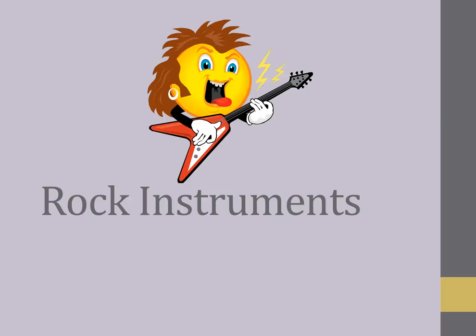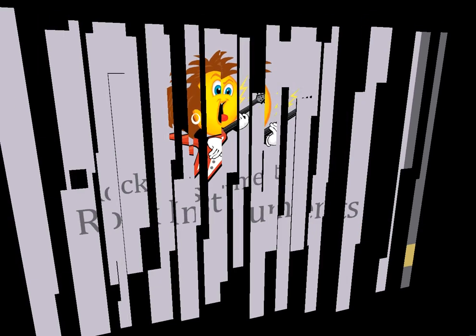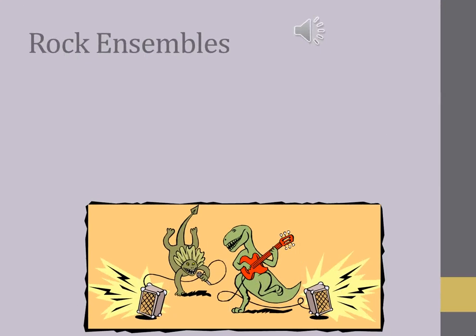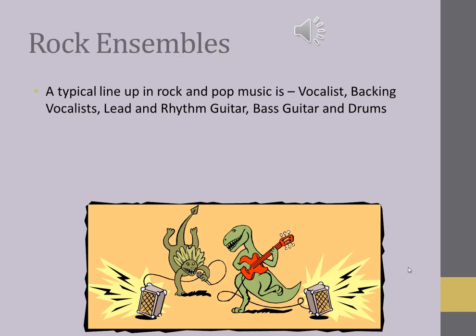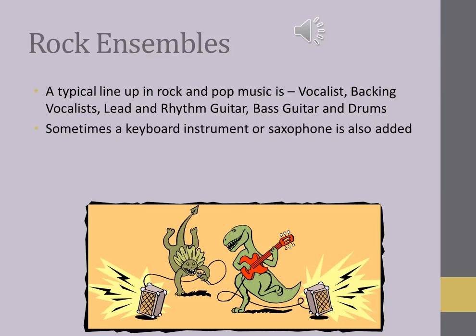Hi and welcome to Rock Instruments. A typical line up in rock and pop music is vocalist, backing vocalist, lead and rhythm guitar, bass guitar and drums. Sometimes a keyboard instrument or saxophone is also added.